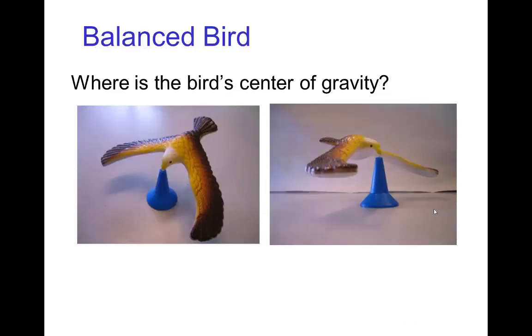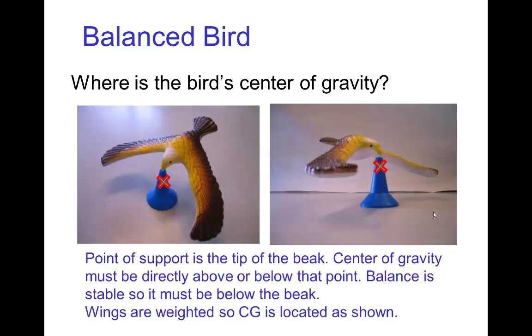So we see an example of that here. This little toy, the bird is balanced with its beak on the pivot point which is that stand. And from this we realize the center of gravity, because this happens to be a stable balance, the center of gravity has to be directly below the pivot point. So it must be located where that red X is marking.